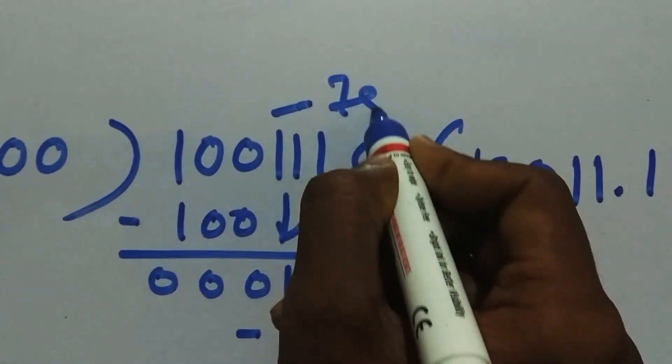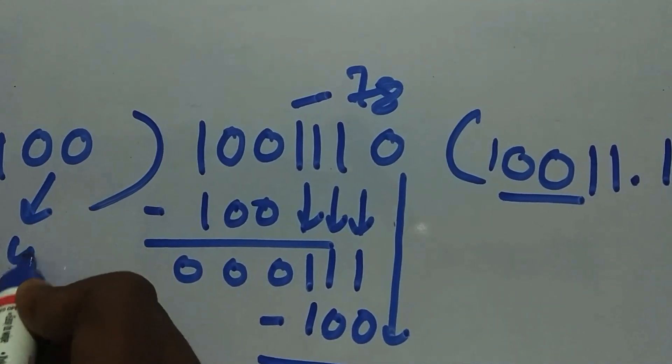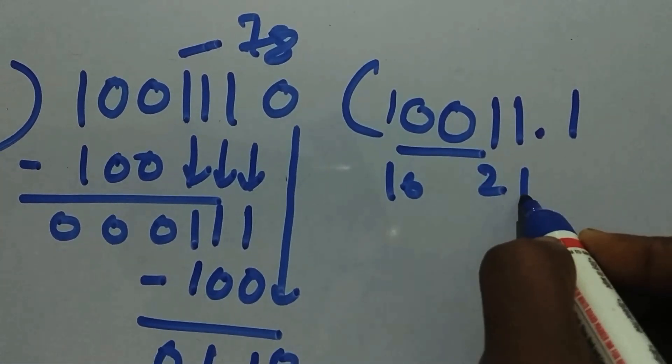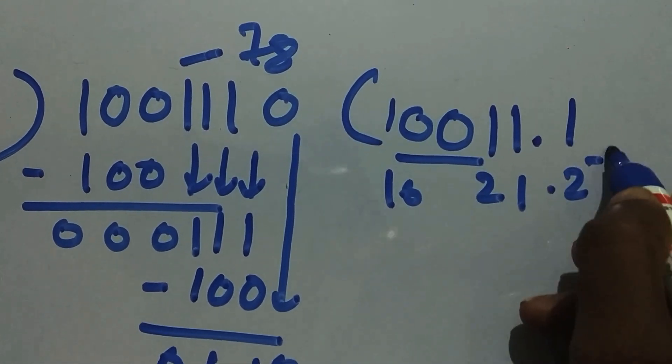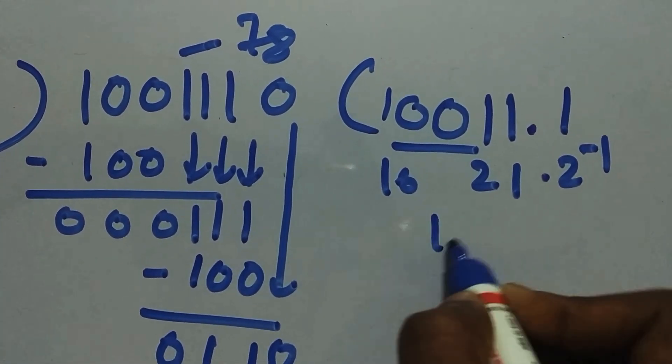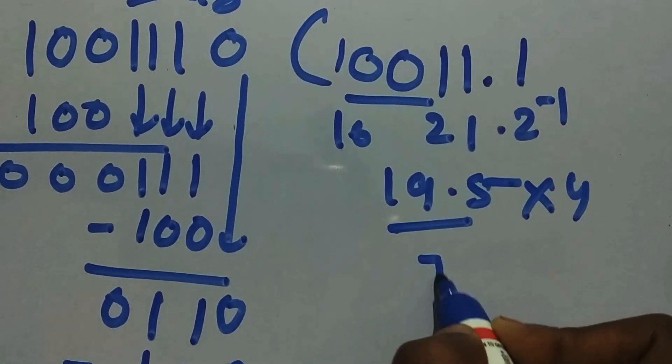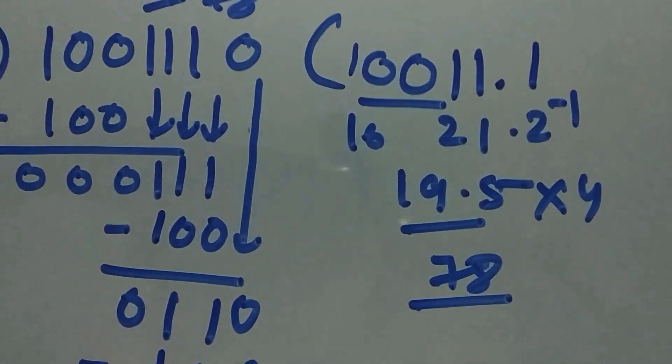What's the value for this? This is 78 and this is 4 in binary. So that's 16 plus 2 plus 1 and 2 power minus 1. So 16 plus 2 plus 1 is 19 plus 0.5 is 19.5. 19.5 times 4 equals 78. If you want to check, you can check.